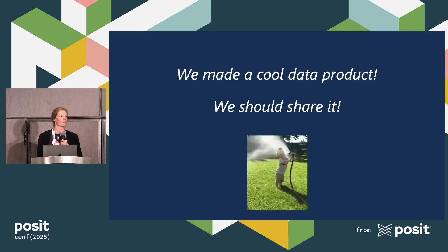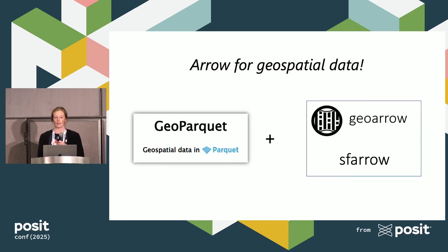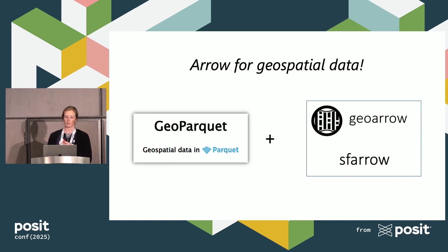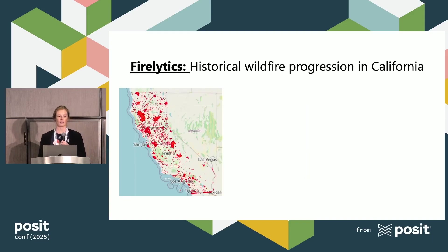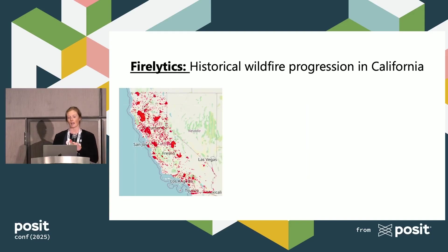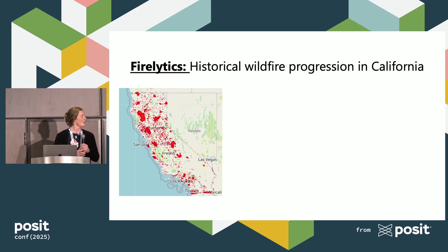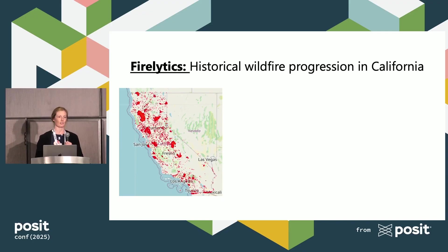I was in this situation recently with a geospatial data product that my team developed, and I'm here to tell you how we used Arrow for geospatial data to deliver our product in an accessible dashboard. Our cool data product is called Firelytics and it's a historical database of fire progression in California. That map up there shows the fire footprint in California just for 2020 — that's a lot of land burned in just one year.